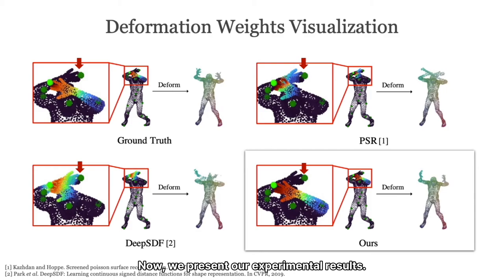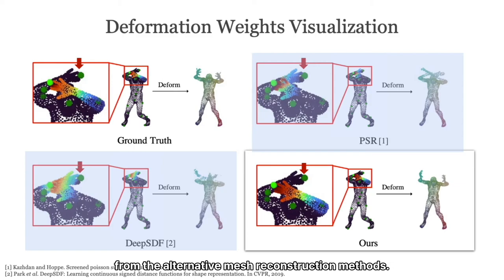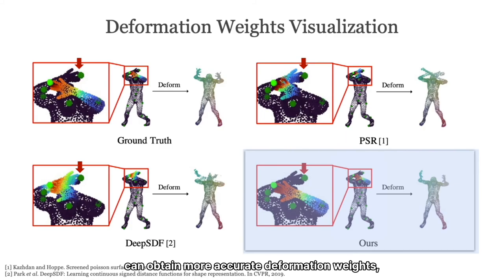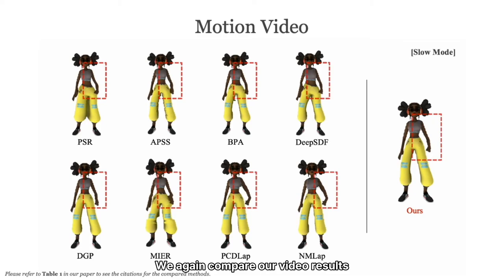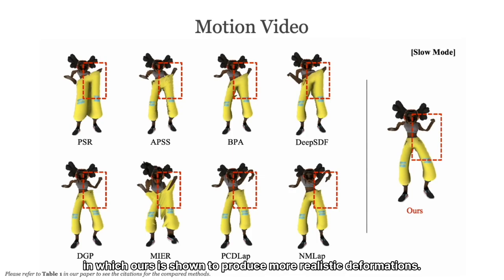We present our experimental results. We first show our deformation weights in comparison to ground truth and weights directly computed from alternative mesh reconstruction methods. We show that our learning-based method can obtain more accurate deformation weights, leading to more plausible shape deformations. We also show motion animations created using our image deformation method, and compare our video results to those created using the alternative methods, in which ours is shown to produce more realistic deformations. For more deformation results, please check our project website.